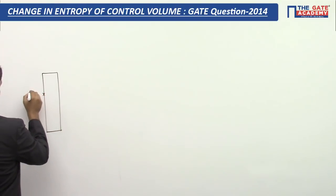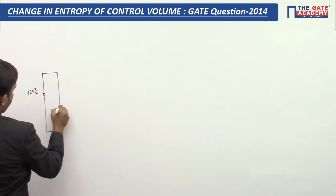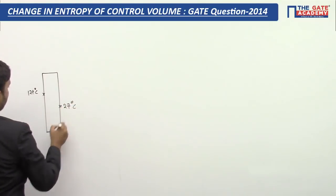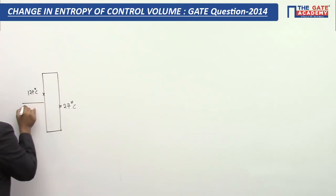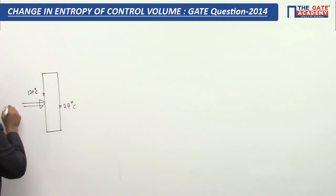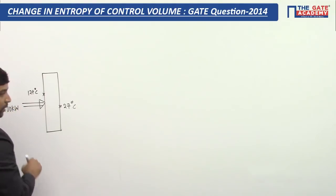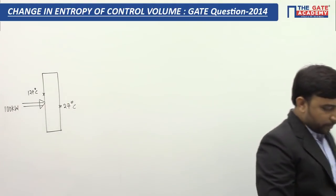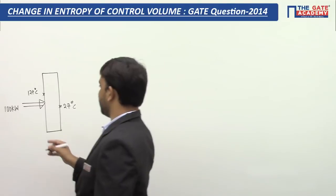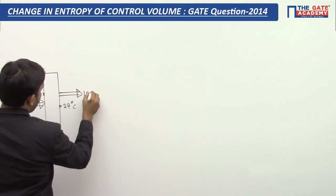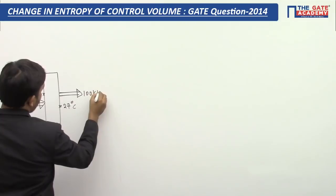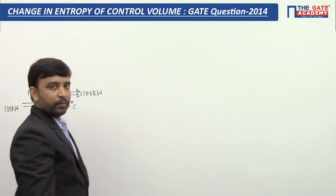This is the wall. Temperature on one side is 127 degrees C and on the other side is 27 degrees C. Since it is steady state heat transfer, if 100 kW of heat enters here, the same amount of heat comes out through the other end of the wall.